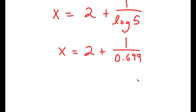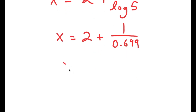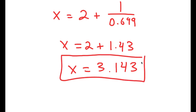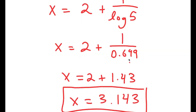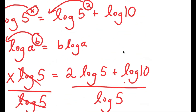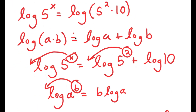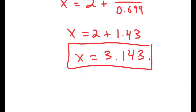Meaning, 1 divided by log 5 is going to equal 1.43. So 2 plus 1.43 is 3.43, giving x is equal to 3.43. And this is my answer to this problem. Remember how we already said that x was going to be somewhere in between 3 and 4 — so this proves us right.